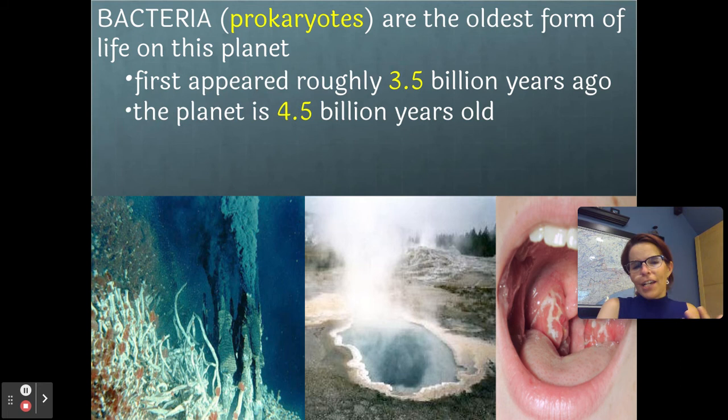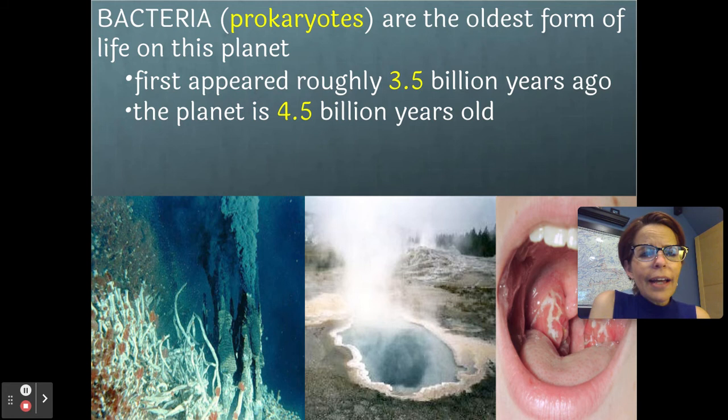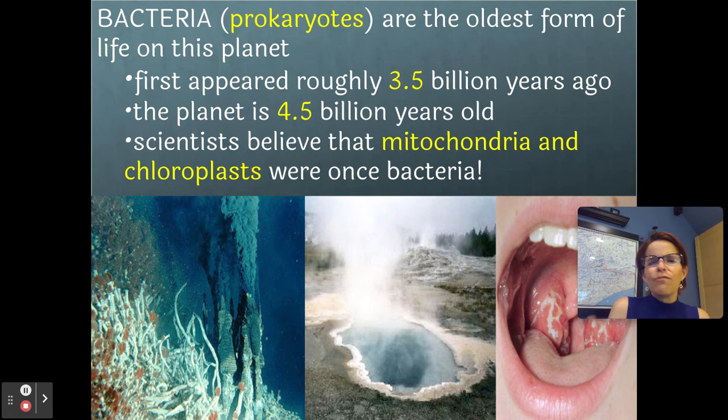So if they appeared three and a half billion years ago, how old is the earth? Well, the earth is about four and a half billion years old. So scientists are saying that this planet had no life on it whatsoever for the first billion years. And then around three and a half billion years ago is when the first prokaryotes showed up — the first bacteria, the very simplest life forms. Over time, we see the evolution of more and more complex cells.